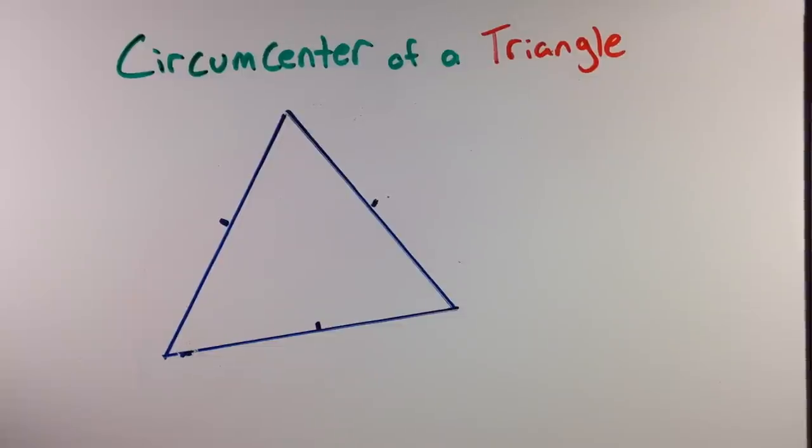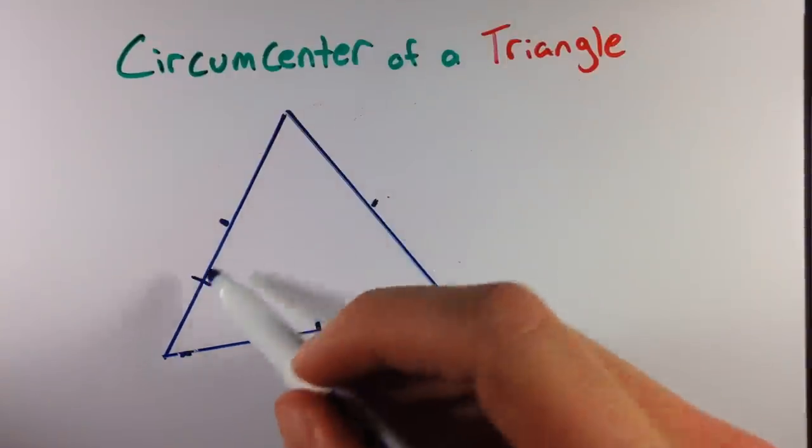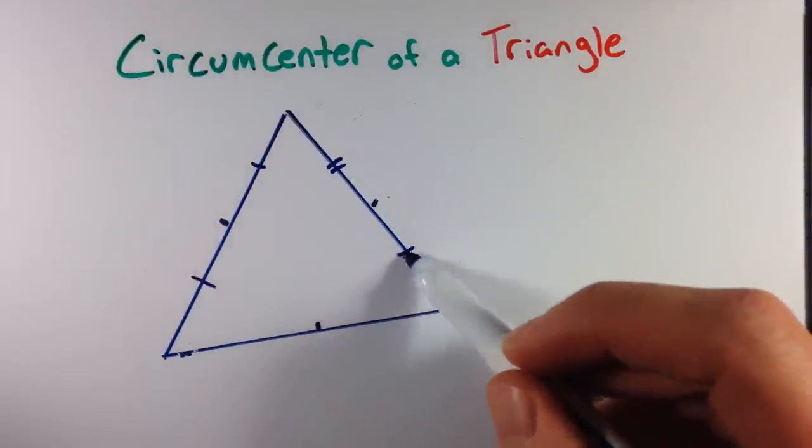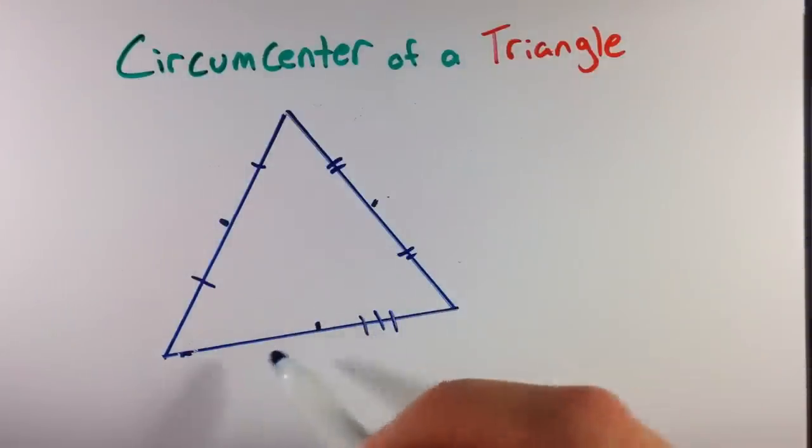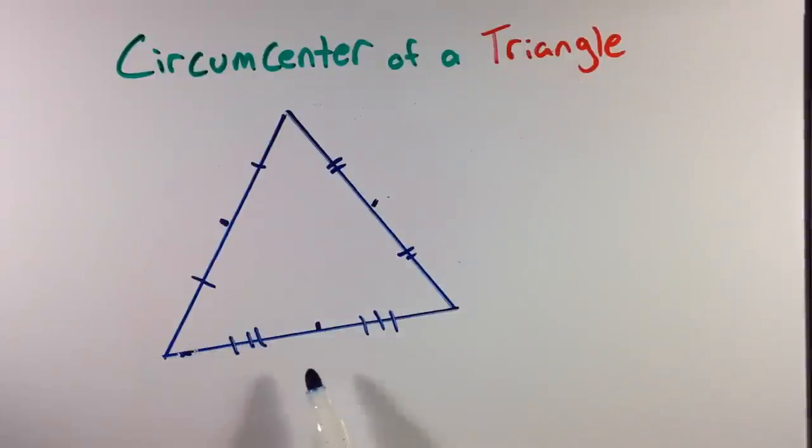If you are trying to find the circumcenter of a triangle, we would first need to find the midpoint of each segment of that triangle, making the two segments next to the midpoint congruent.